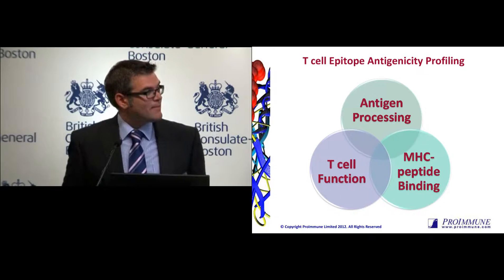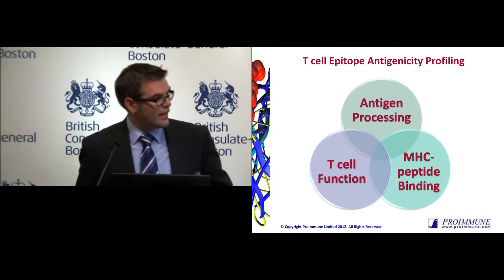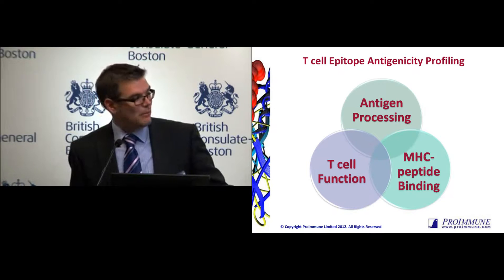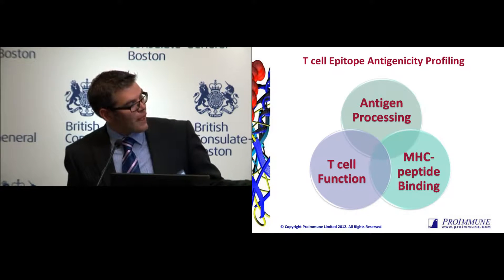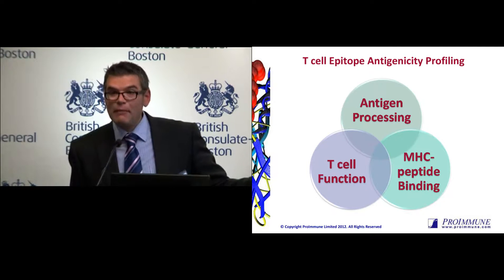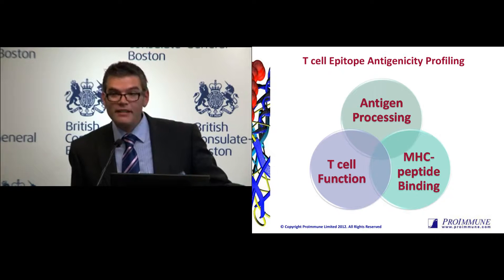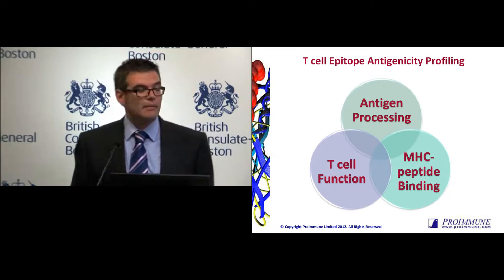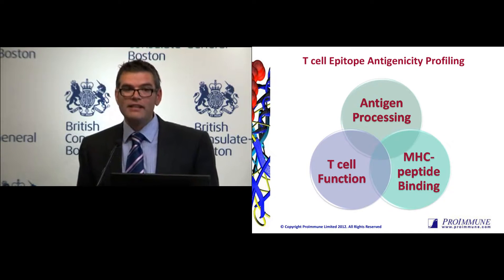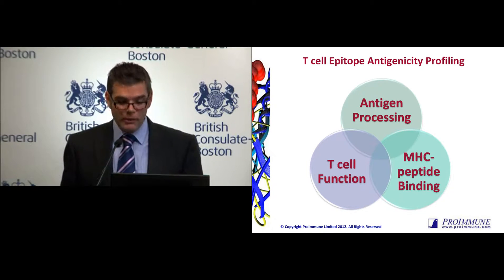T-cell epitopes are complicated. It's not just a matter of whether a peptide can bind to an MHC molecule — as indicated by the MHC peptide binding part of my Venn diagram — but also whether this peptide can actually be processed in the first place. Can our epitopes be seen by the immune system? The peptide then has to bind to the MHC, and then we actually have to have an avid interaction between the T-cell receptor and the MHC peptide complex, which goes on to be functional and can then cause an immune response.